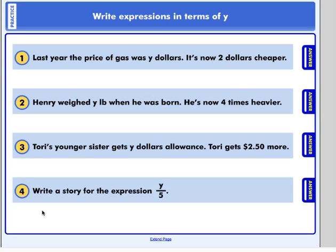You should have written expressions in terms of y for these four situations. Let's look at number one. Last year, the price of gas was y dollars. It's now two dollars cheaper. So your expression would be y minus two.